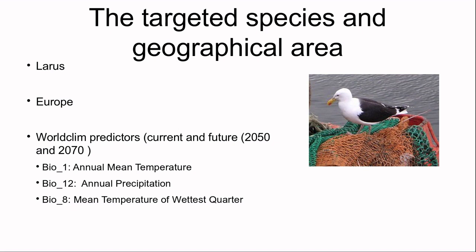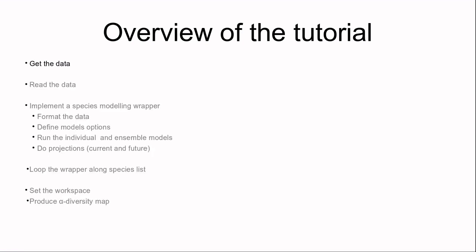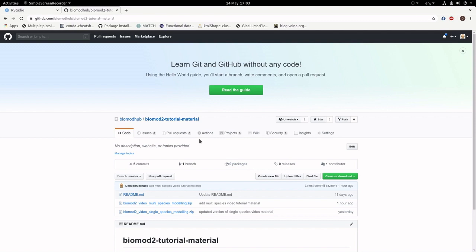Then we define the options — all the default options for this example. The following lines run the individual models: a GLM, FDA, and Random Forest with two cross-validations using 70% of the data to calibrate the models. We will also use TSS and ROC evaluation and compute variable importances three times. A couple of lines are added to produce model score graphs for every individual species, according to the model, dataset, or CV run selected, all wrapped up in a model score PDF.